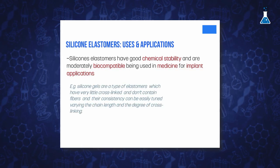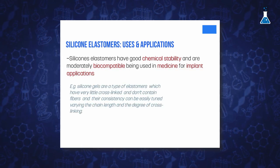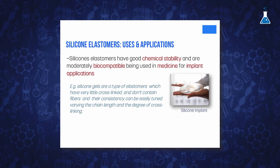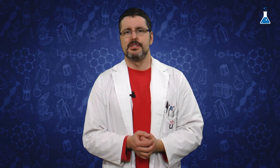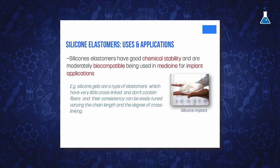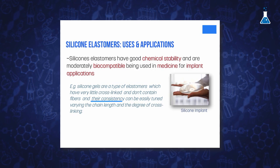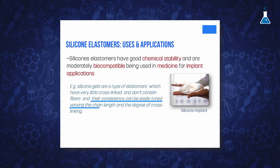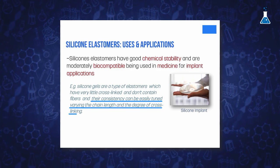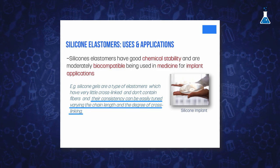One type of silicone elastomer, silicone gels, are very famous as breast implant material. Silicone gels have very little cross-linking and usually they don't contain silica or any other filler. Nevertheless, the consistency of silicone gels can be tuned by simply varying the chain length and the degree of cross-linking.